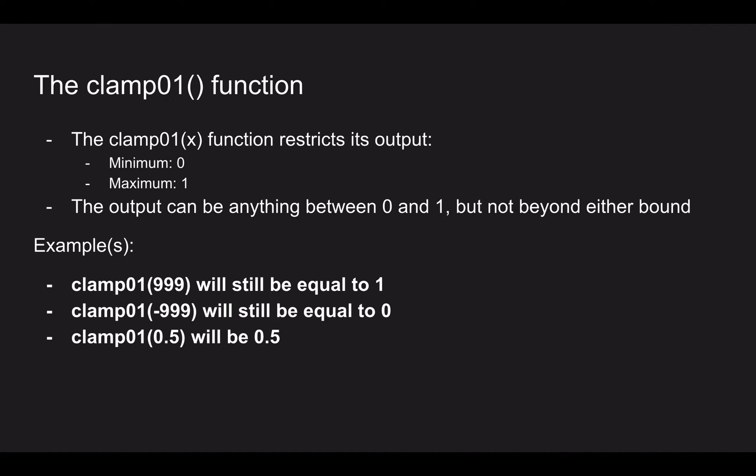The next function we're going to look at is the clamp01 function. This is also a very useful and versatile function because the clamp01 function restricts its output to a minimum of 0 and a maximum of 1. The output can be anything between 0 and 1 but not beyond either bound. For example, clamp01(999) will still equal 1 because the maximum is 1. Clamp01(negative 999) will still equal 0 because the minimum is 0. And clamp01(0.5) will be 0.5 because anything between 0 and 1 is fine.